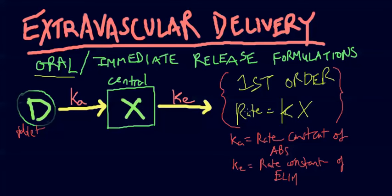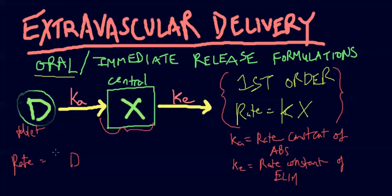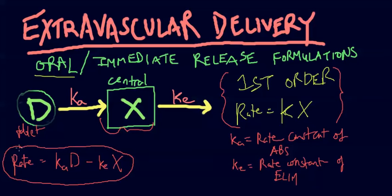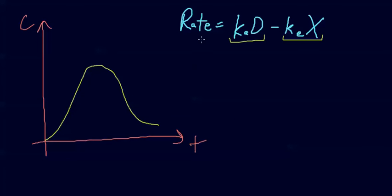How do we apply two rate constants? We just use the rate equation twice. Looking at the central compartment: the amount of drug entering is ka times D (D is the amount of drug in the GI tract), and the amount leaving is ke times x. Elimination is always negative, so the rate equation is: rate = ka·D − ke·x.